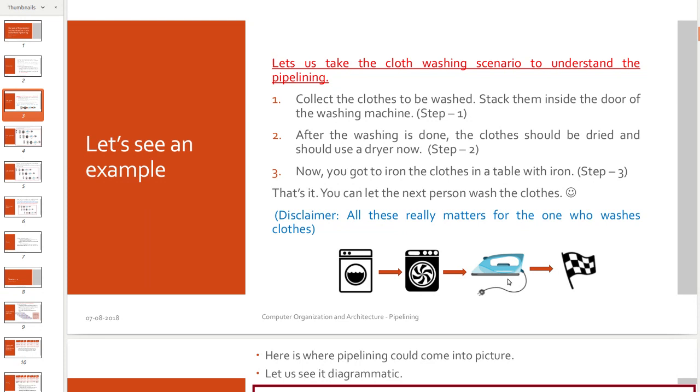So these are all called stages of pipelining. That's it. Stages of the instruction. An instruction has to be fetched, decoded, executed. You can simply understand that way.